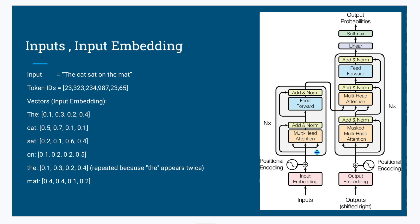Before going into the details of multi-head attention and feed forward, let's first understand this NX multi-layer. Let's understand how the data is going to flow from positional encoding through the different layers and then pass it to the decoder module. This is the encoder module and this is the decoder module.